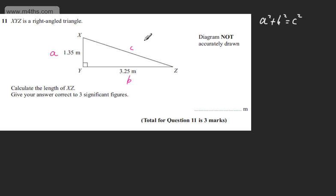If we square the two shorter sides and add it together, it gives us the hypotenuse squared. So what we're going to have is 1.35 squared plus 3.25 squared is equal to C squared, or if you like, XZ squared.